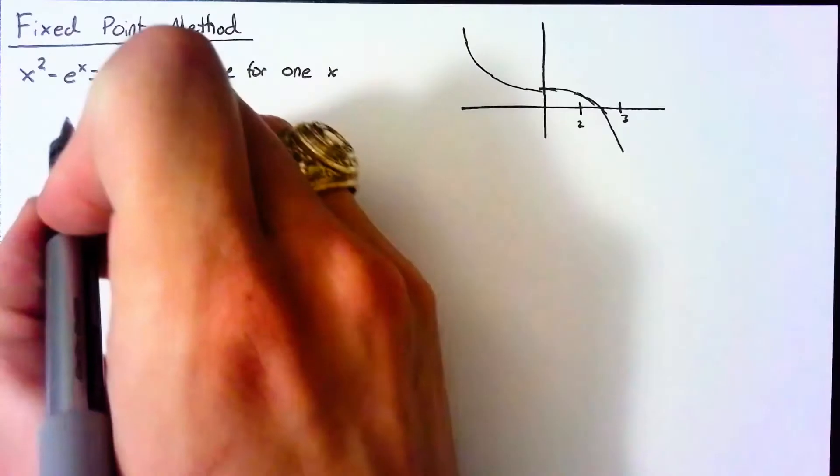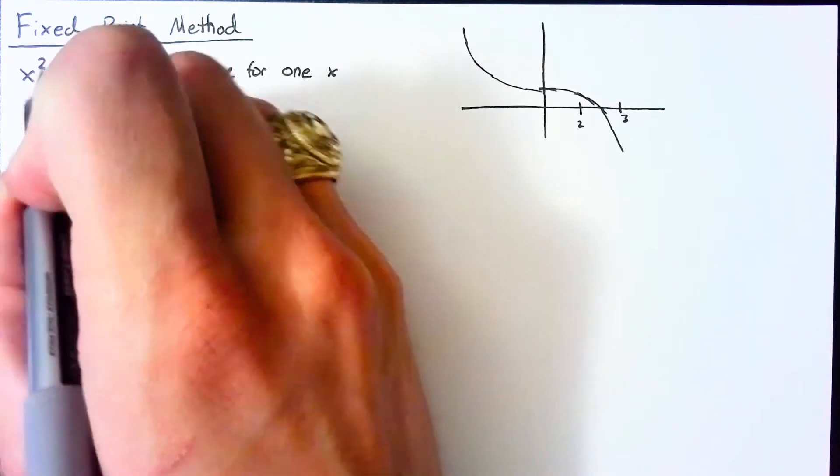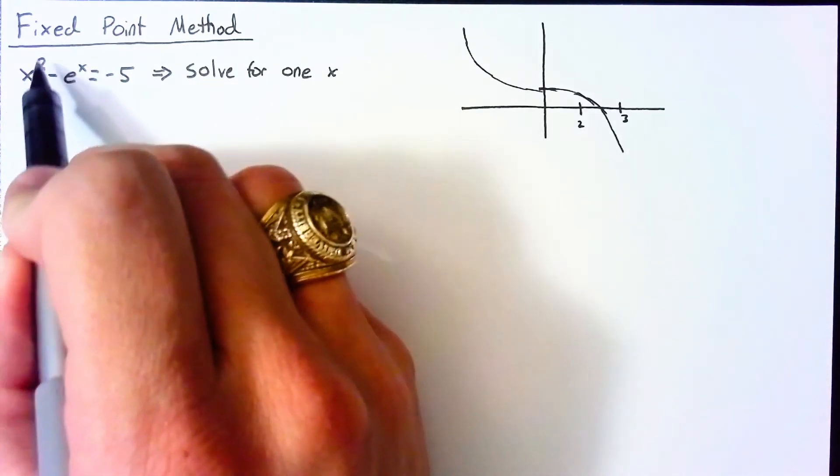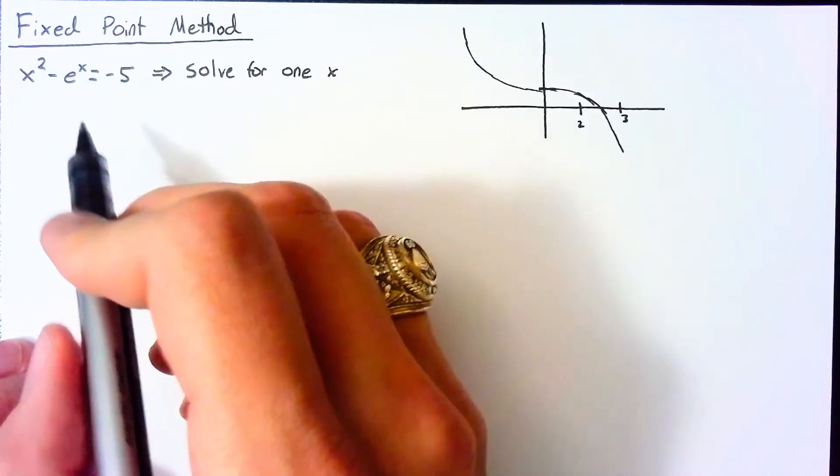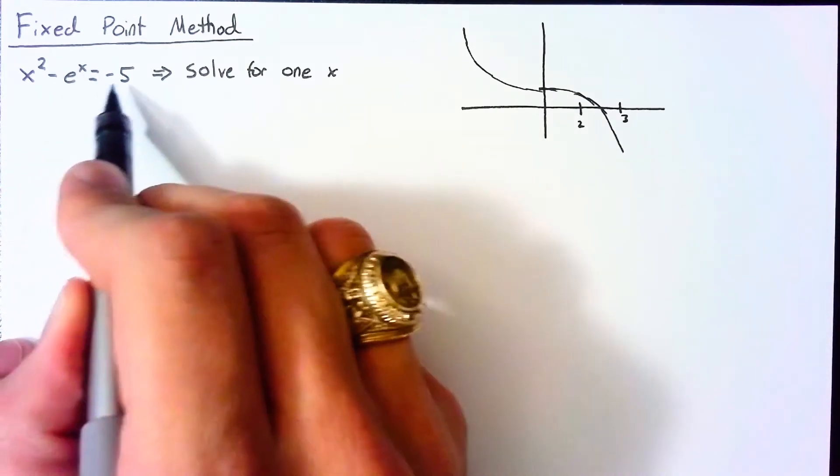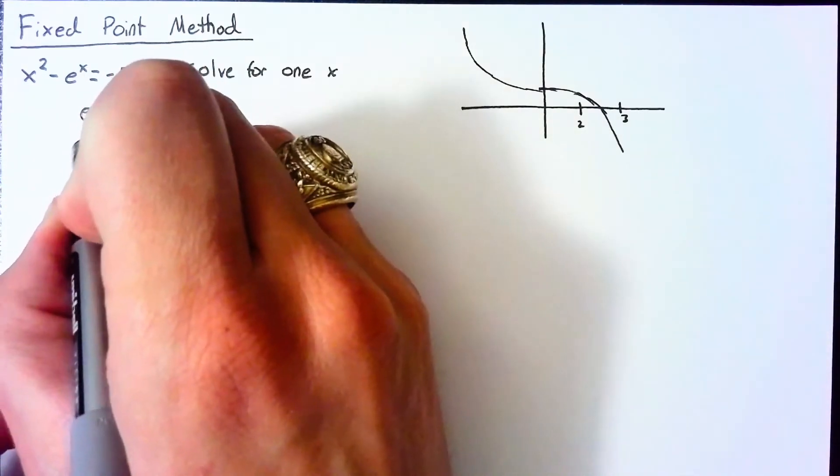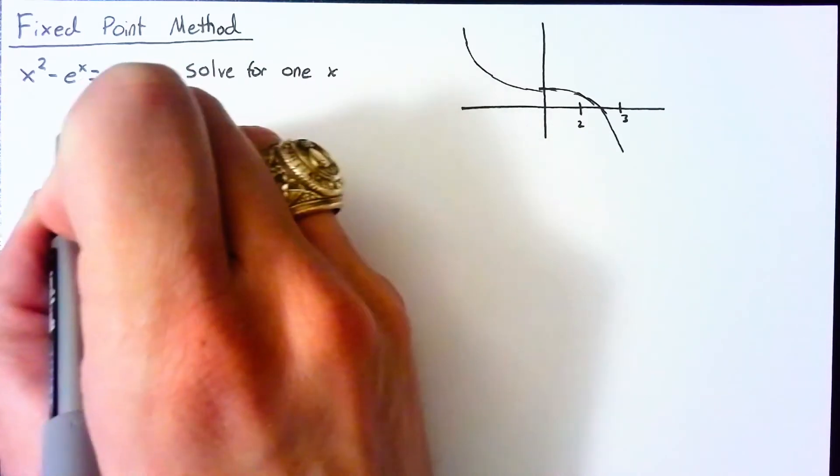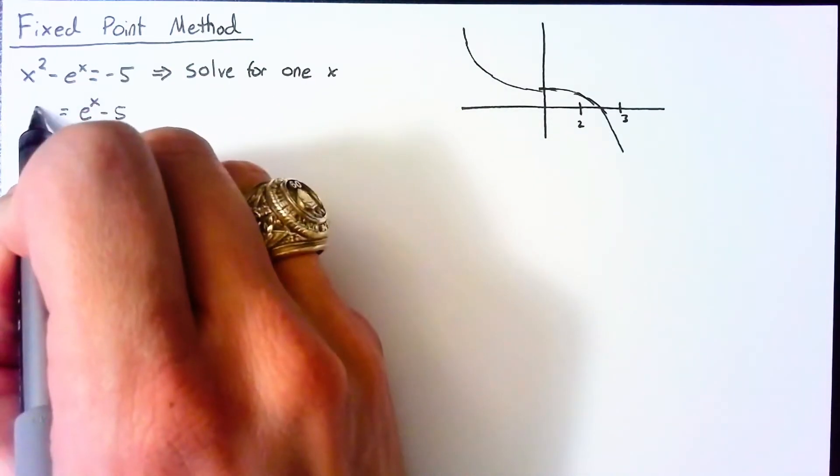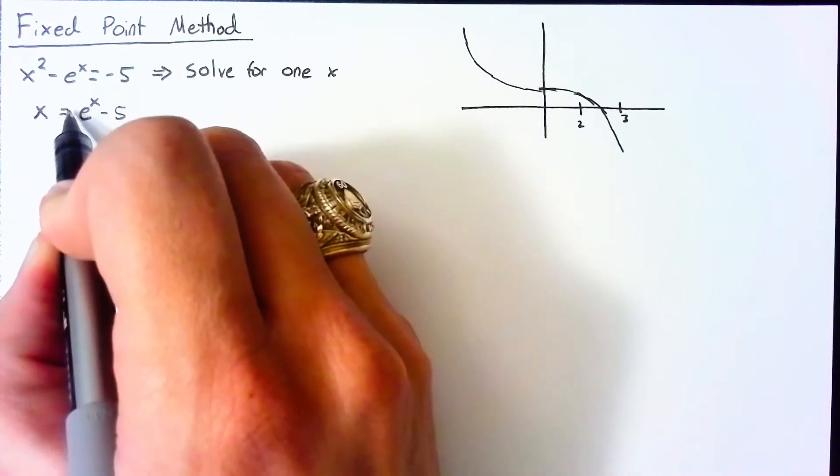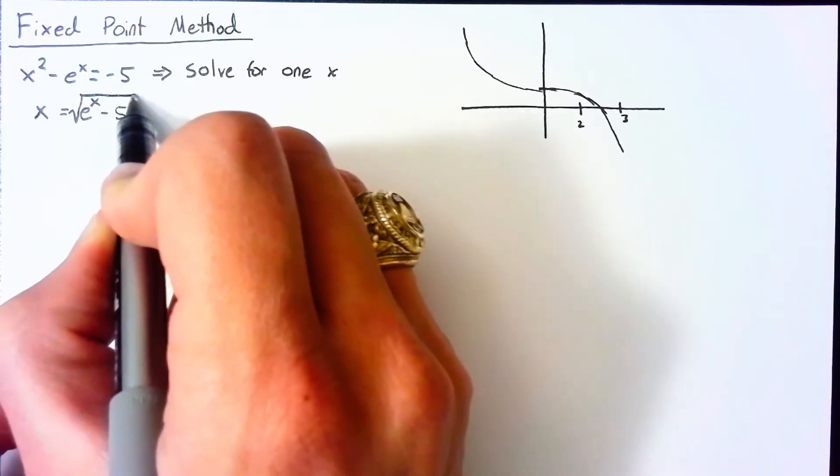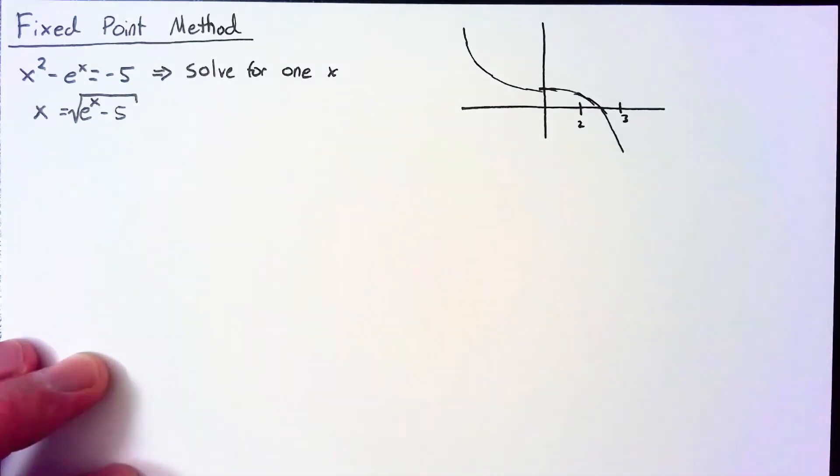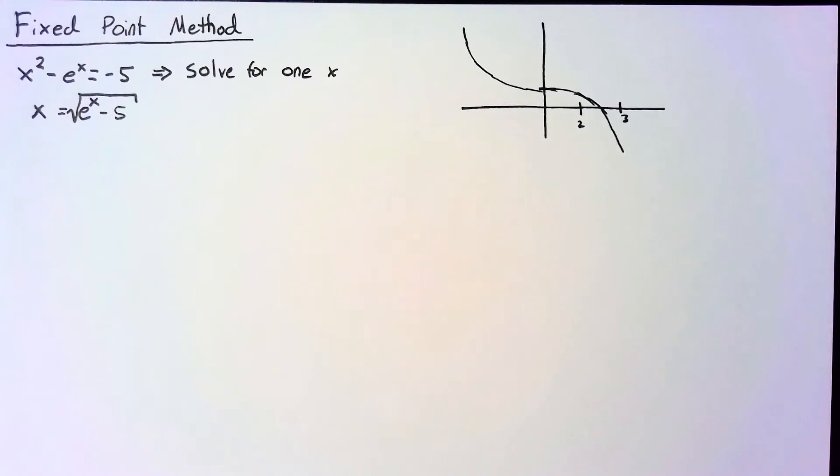So for our first method, let's isolate the x from this x². So I'm going to move the e^x to the right hand side and end up with e^x - 5. And then to isolate the x, I need to take the square root. So we're going to end up with x = √(e^x - 5).